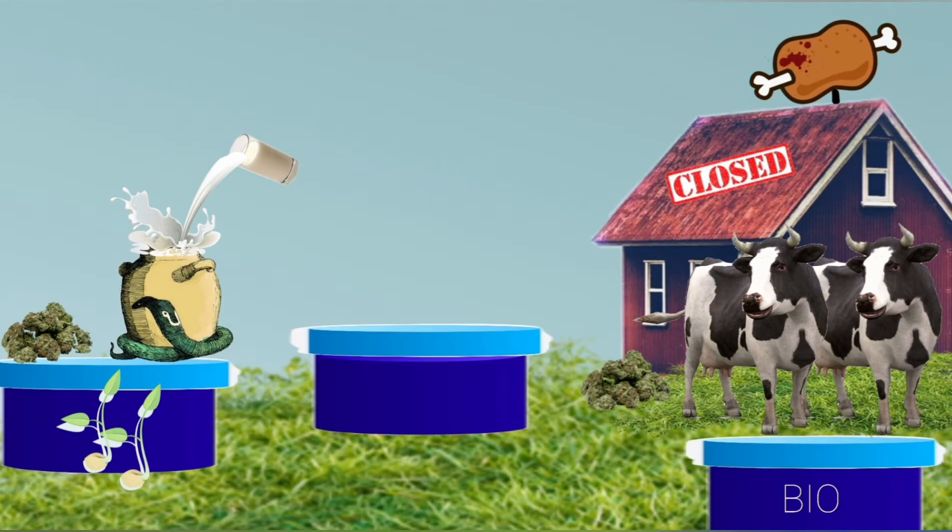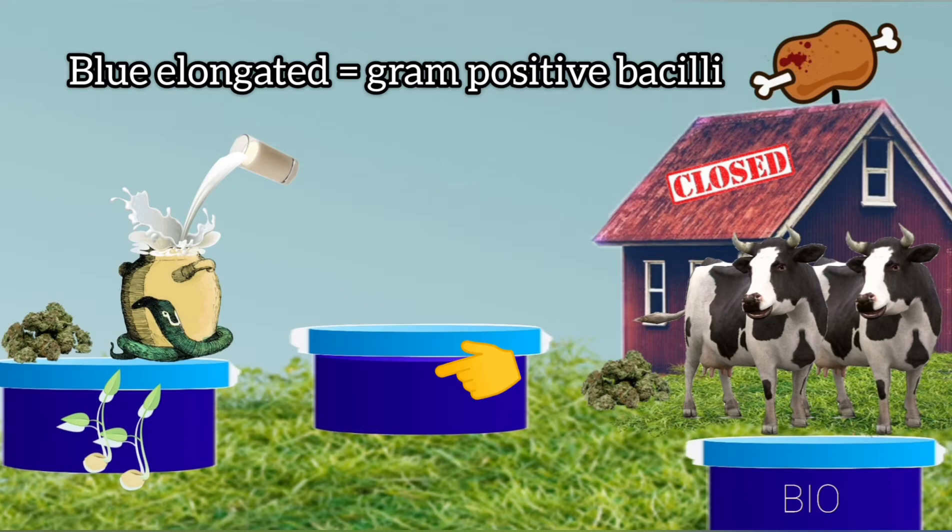These wells are blue in color and sort of elongated, which denotes that it is a gram positive bacilli.